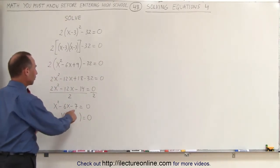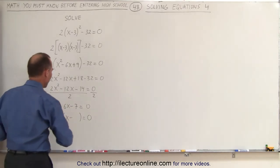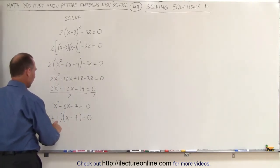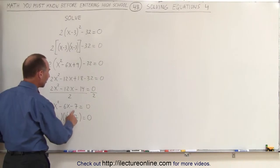When we multiply, we get negative 7. When we add them, we get negative 6. That looks like minus 7 and plus 1 will do the trick, because 1 minus 7 is minus 6 and 1 times minus 7 is minus 7.